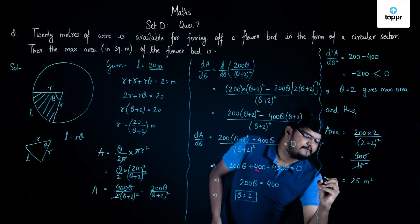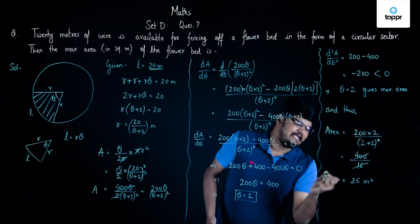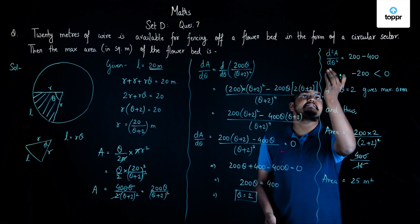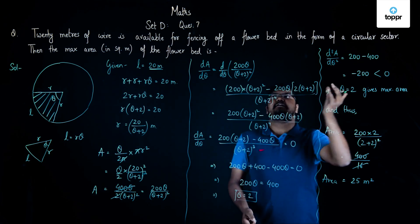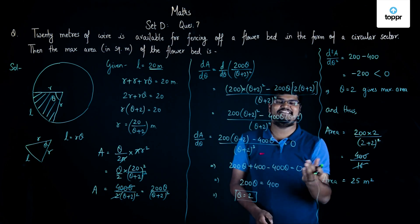So the final answer — the maximum area of the circular sector flower bed — is 25 square meters.